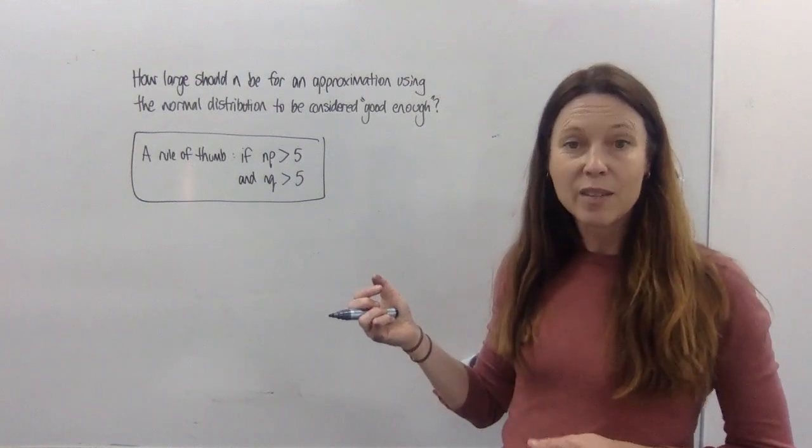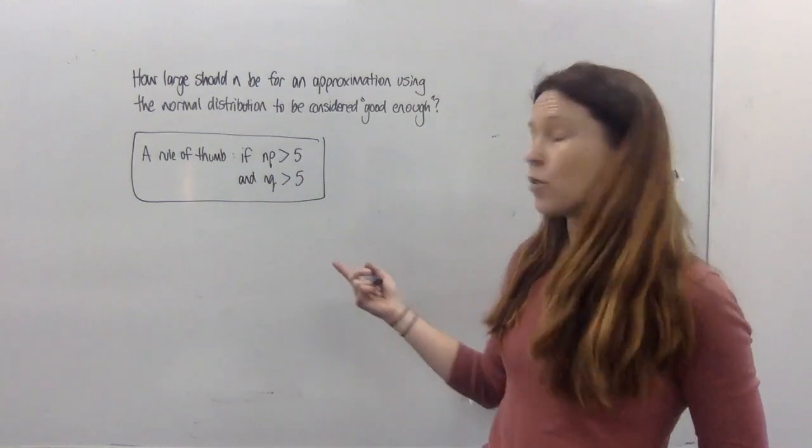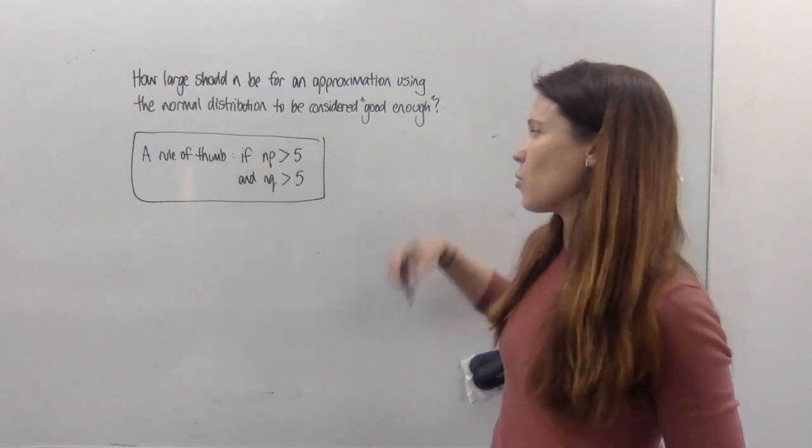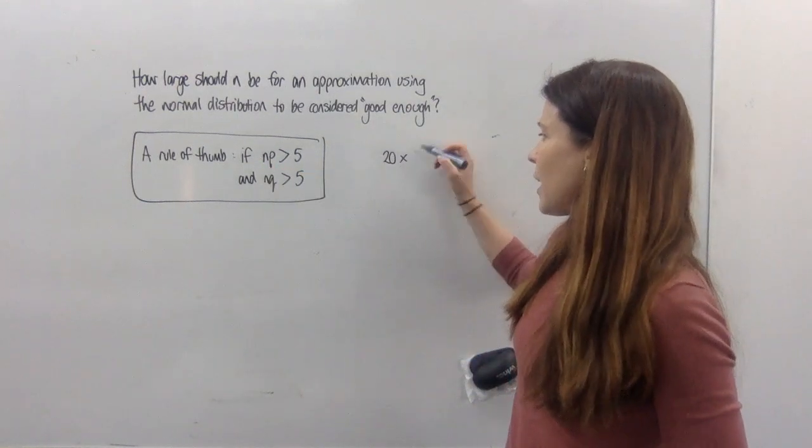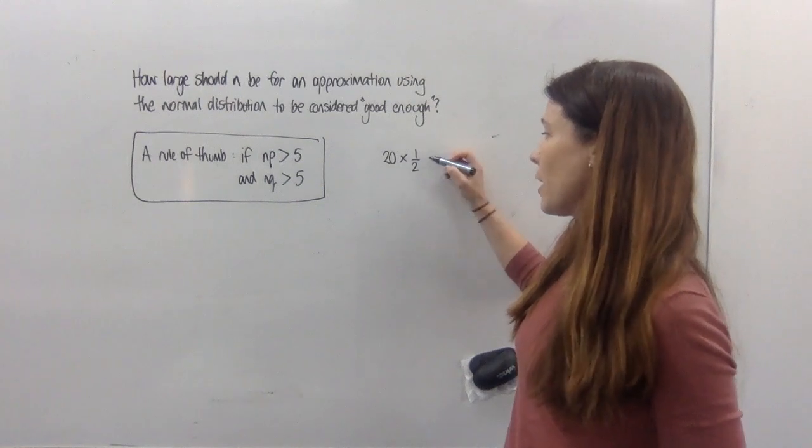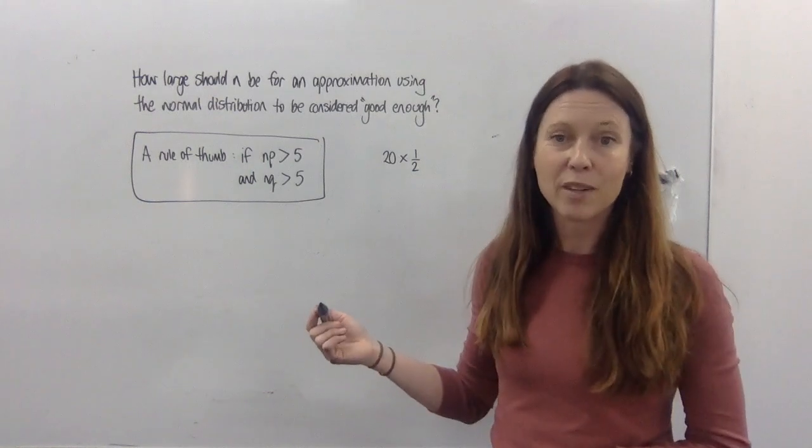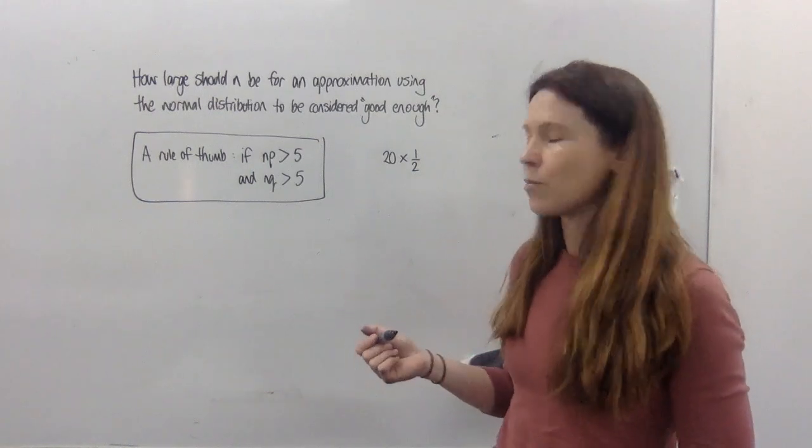But one rule of thumb is that if np and nq are both greater than 5, then your answer is going to be close enough that you may as well do it the normal way, which most times is going to be a lot easier. So in that last example, we found that n was 20, and both p and q were a half. So 10, definitely bigger than 5, it was quite acceptable to do it. And we saw that the answer, in fact, was really close, no matter which method we used.